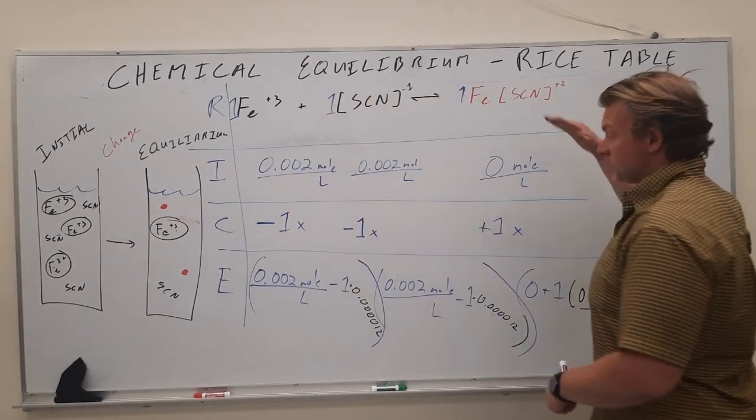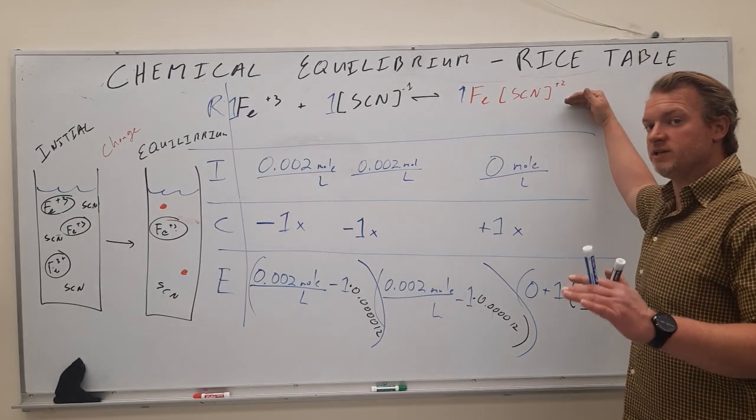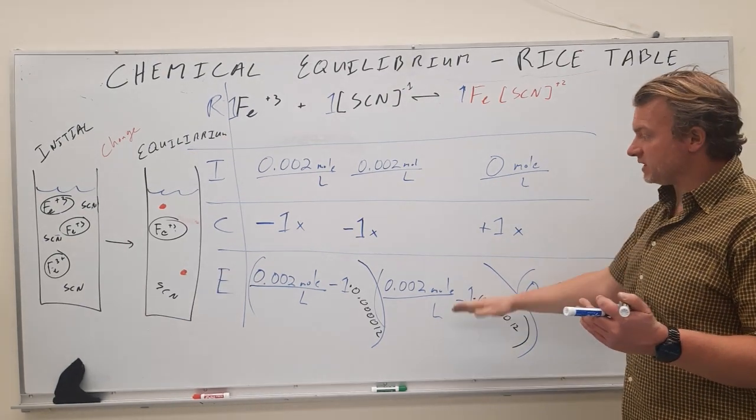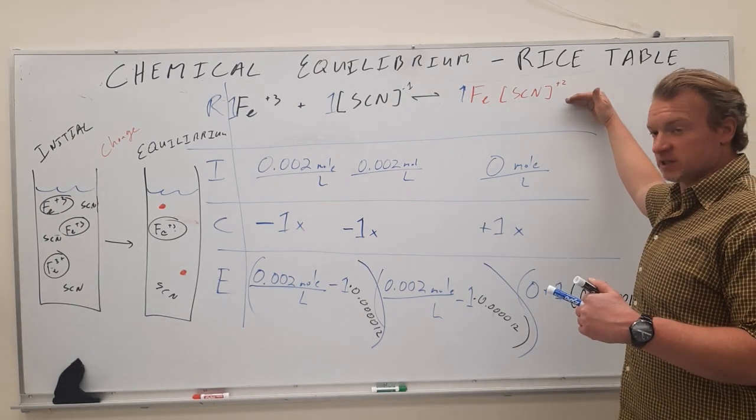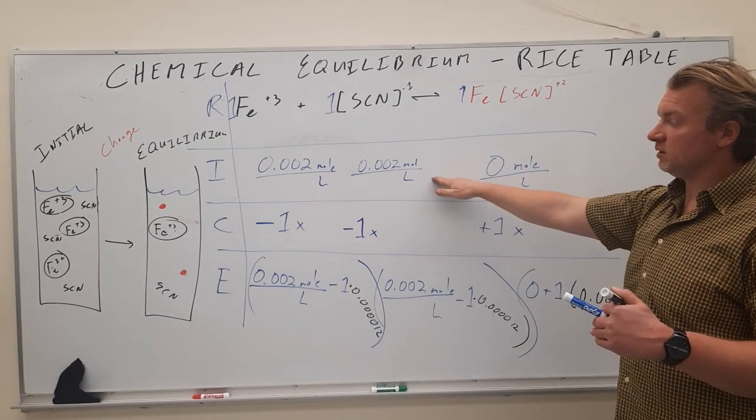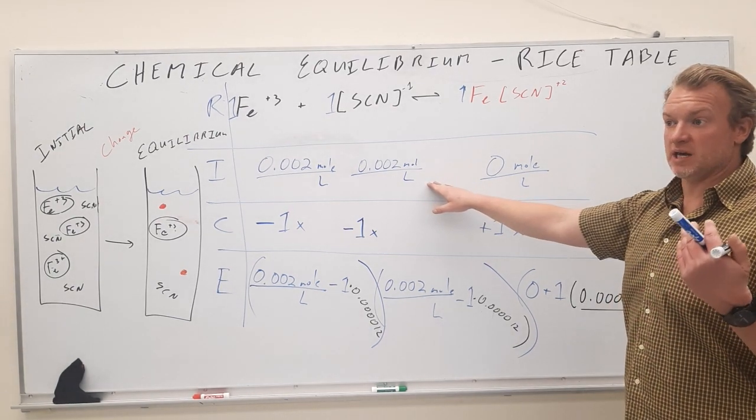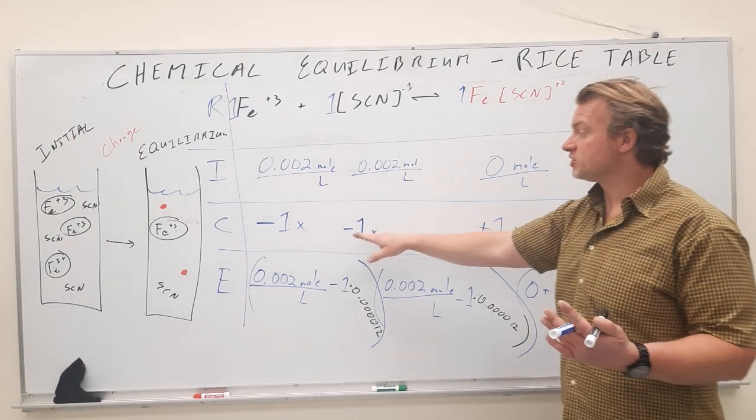If we have all, this is how we set up our RICE table. We have our reaction. We use a RICE table when we're asked to calculate capital K and we need to know the concentrations at equilibrium. We start out with our reaction on top. The initial concentrations of our reactants or products are usually given to us in the lab that has been designed.